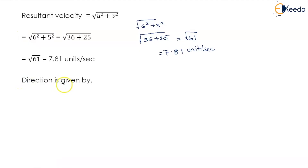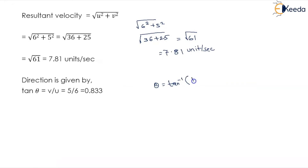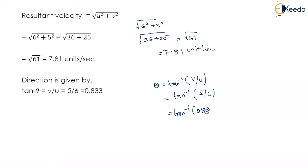The direction is given by tan theta equals v upon u. So theta equals tan inverse of v upon u. This becomes tan inverse of 5 upon 6, which equals tan inverse of 0.833, giving theta equal to 39 degrees and 48 minutes.